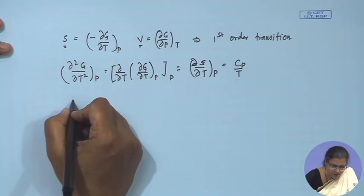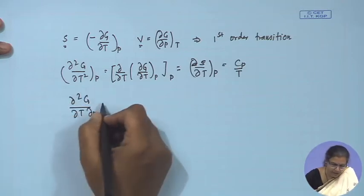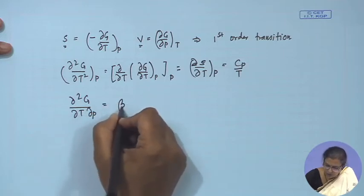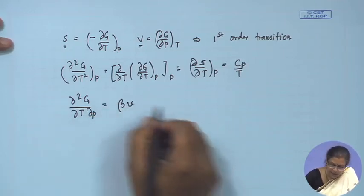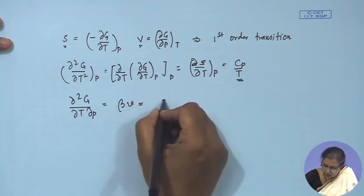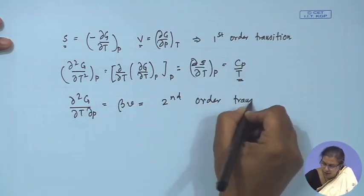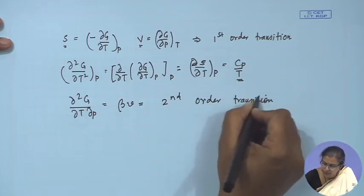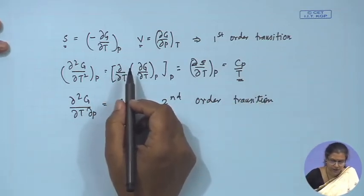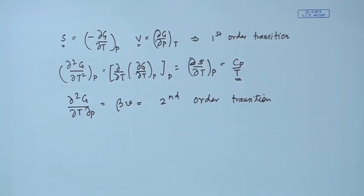For second-order transitions, these two parameters — C_p/T and beta·V — undergo an abrupt discontinuity while the first derivatives remain constant. All transitions discussed in the last class refer to first-order transitions.